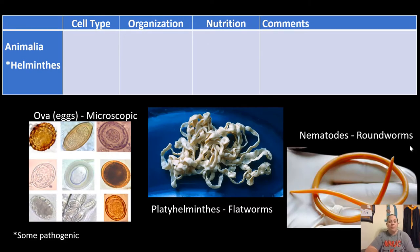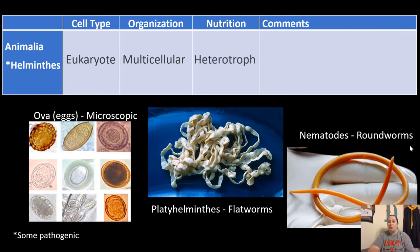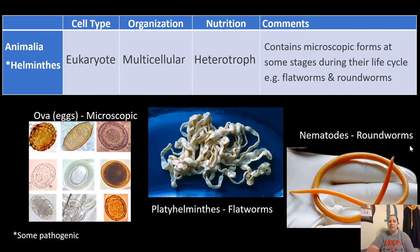The last group is animalia. The cell type is eukaryotic. Specifically in animalia for microbiology, we look at helminths — the worms. They have a multicellular organization and are heterotrophs. They do contain microscopic forms at some stage in their life cycle, so even though some can be seen with the naked eye, there is a microscopic stage somewhere. Examples include flatworms in the group Platyhelminthes — like tapeworms — and roundworms in the group Nematoda. The ova or egg forms are microscopic.